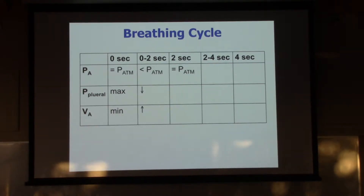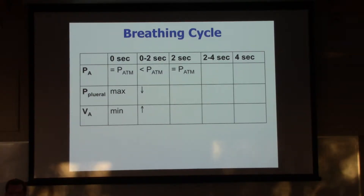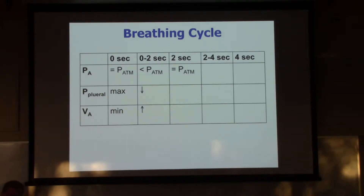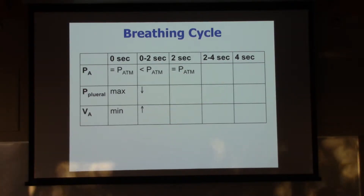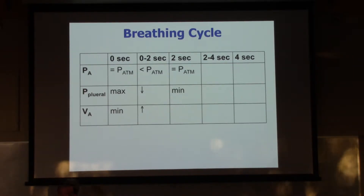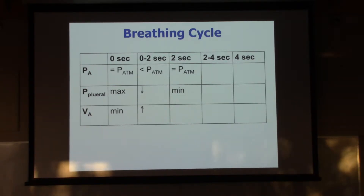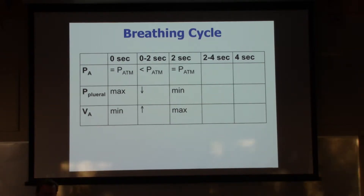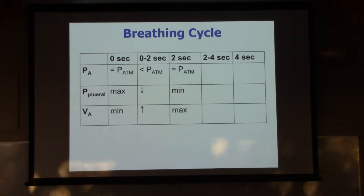The interpleural pressure - we've got the walls of our thoracic cavity out as far as we're going to. That inner layer of the pleura is really trying to pull in because it's attached to the lungs, and the lungs are trying to recoil. So the interpleural pressure is at its minimum - the most negative that it will be during the cycle. And the volume of the alveoli is at its maximum. We've inhaled as much as we're going to.